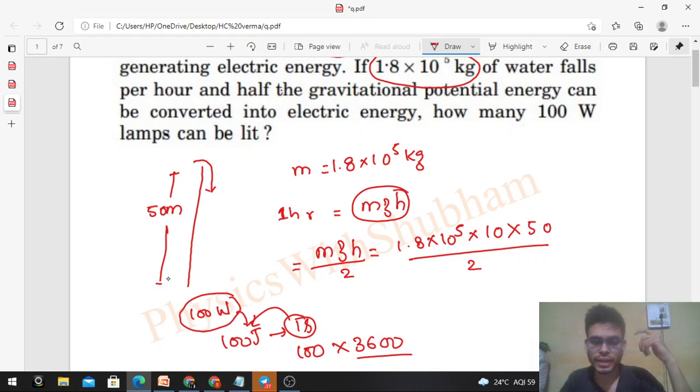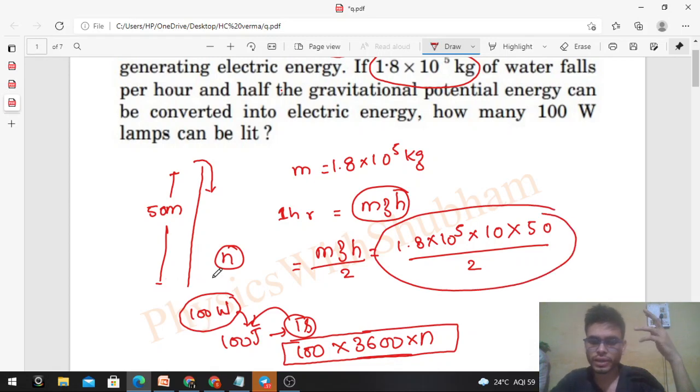Now if I say we can light n bulbs, you know what is the amount of energy needed for n bulbs? This is the energy needed for one, right? So for n you have to multiply it with n. So this is the energy needed and this is the energy we have, so you can find out the value of n from here.